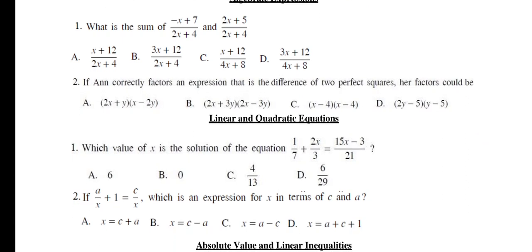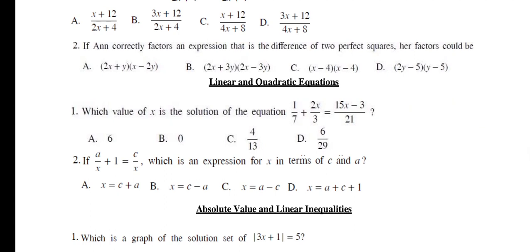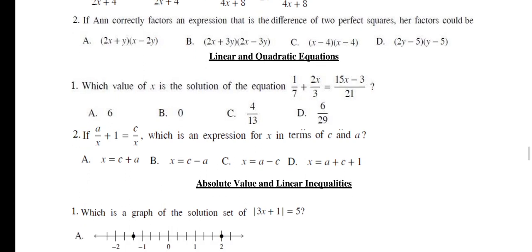Questions from linear and quadratic equations. Number 1: Which value of X is the solution of the equation 1 upon 7 plus 2X upon 3 is equal to 15X minus 3 upon 21? The right option is A. Number 2: If A upon X plus 1 is equal to C upon X, which is an expression for X in terms of C and A? The right option is B. X is equal to C minus A.